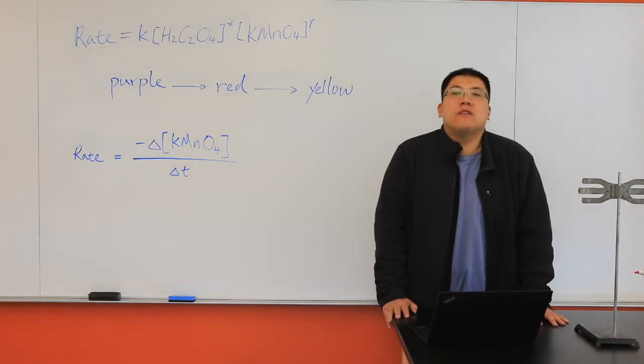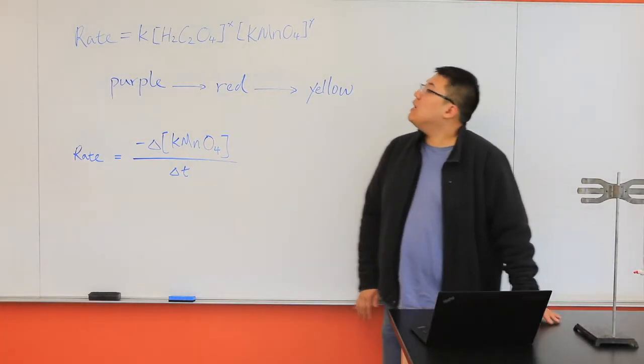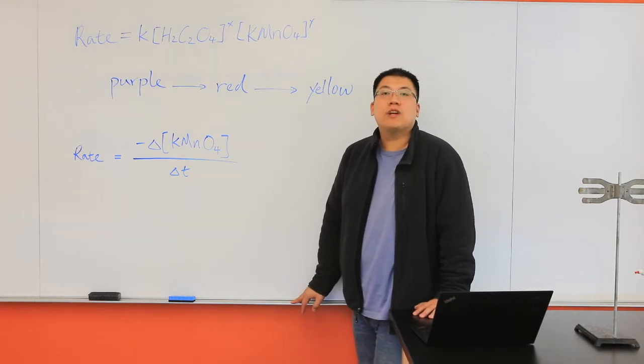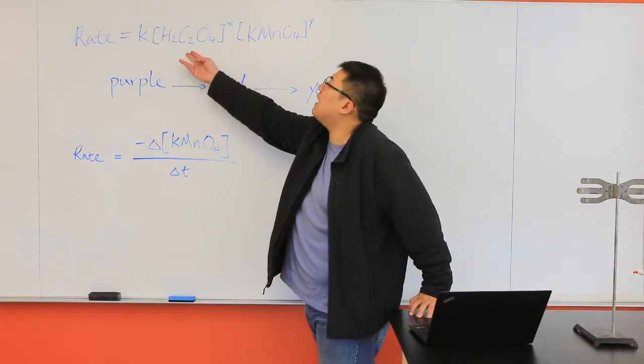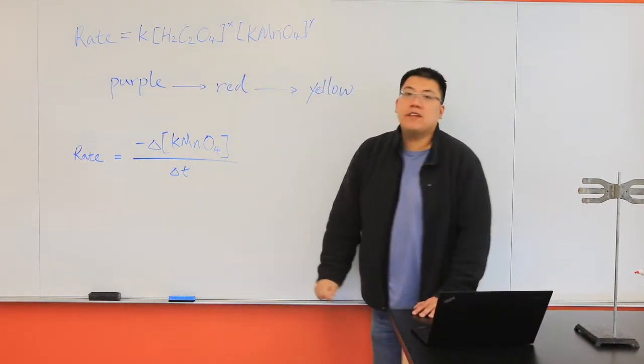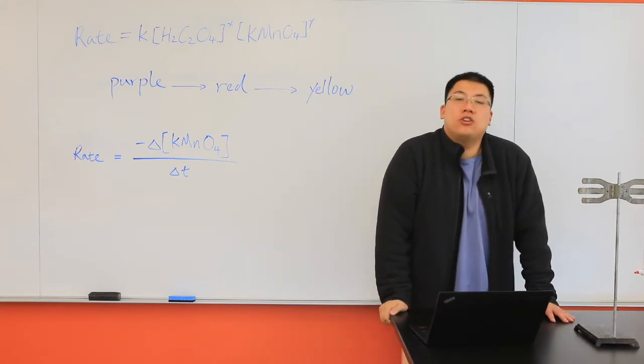Hello everyone, welcome to the first visual experiment. In this experiment, we're going to study the rate of reaction between zinc acid and potassium permanganate by the method of initial rate.